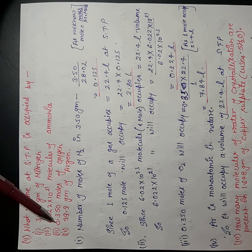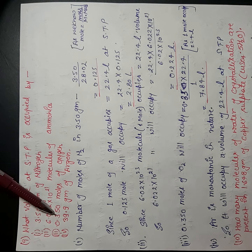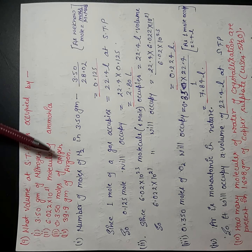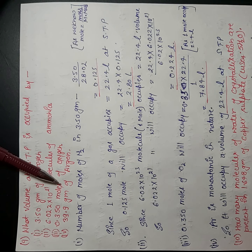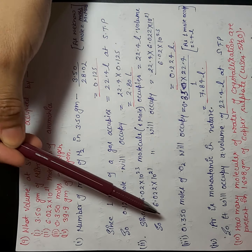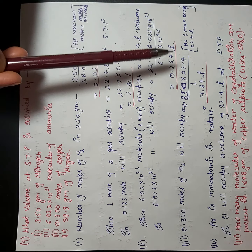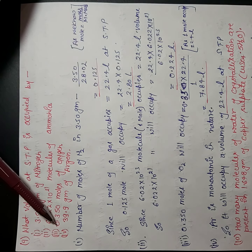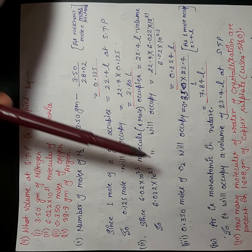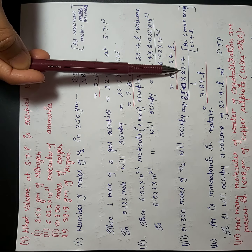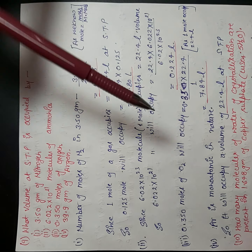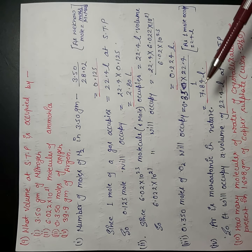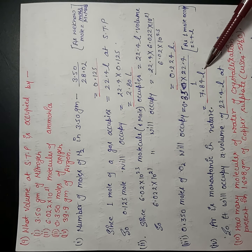The third case is 0.350 moles of oxygen. This is a very simple case because the moles are already given. As we know that 1 mole occupies 22.4 liters, then 0.35 moles will occupy 22.4 × 0.350, which equals 7.84 liters.